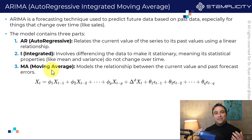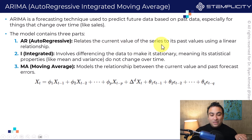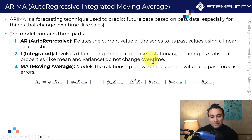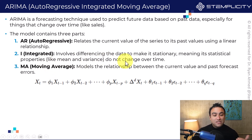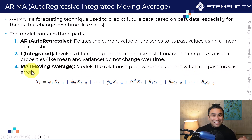We're going to explain all these different math and equations in very simple terms. Autoregressive relates the current value of the series to its past value using a linear relationship. Integrated involves differencing the data to make it stationary, meaning its statistical properties like mean and variance don't change over time. Moving Average models the relationship between the current value and past forecasting errors.